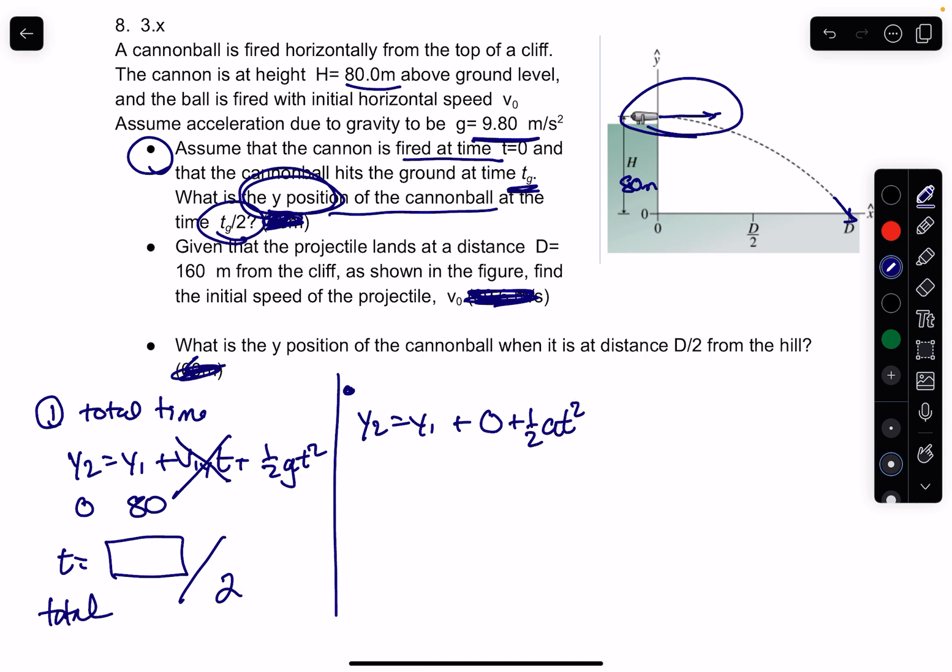Plus 1 half at squared. Now in this case, y1 is 80, y2 is our question mark, and our time is going to be whatever your time is divided by 2. And so that's how you're going to solve for the first bullet right here.